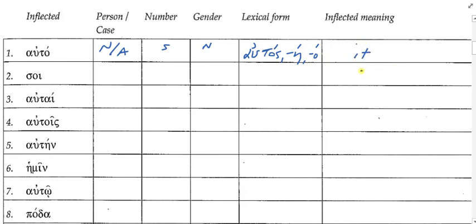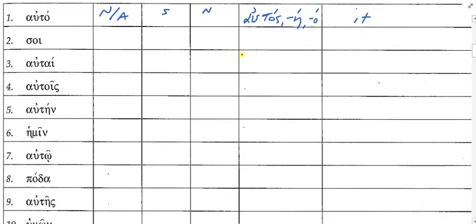For the inflective meaning for any of these forms of 'autos', it's really a crapshoot because we have no context. We don't know whether it's the pronoun, the adjectival use, and if it's the adjectival use — which one? Same? Himself? Itself? It could be anything, so a little more latitude without context. I would assume these are the pronoun though — that'd be the easiest thing to do.